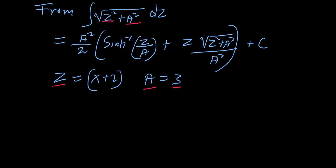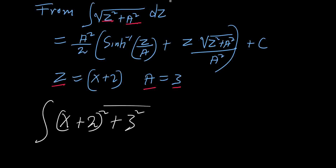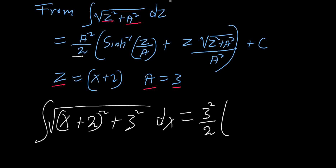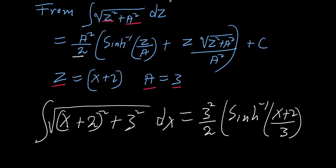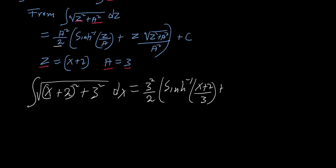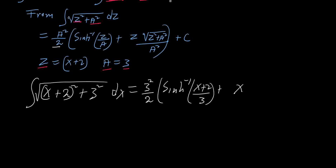This means the integral of root((x+2) squared plus 3 squared) dx equals: a squared over 2 becomes 3 squared over 2, times sinh inverse of z over a which is (x+2) over 3, plus z which is x plus 2.